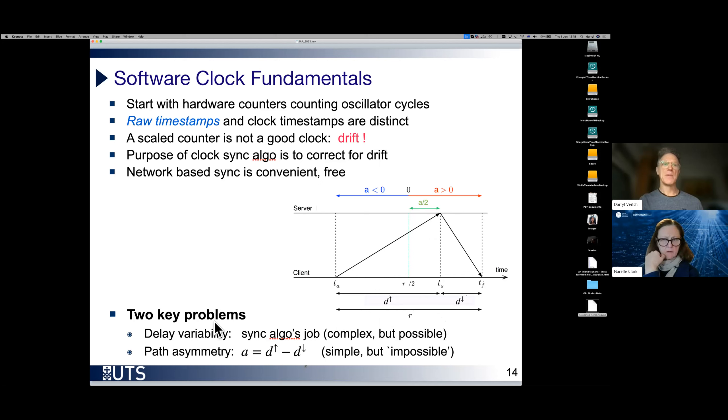So the raw data of these timestamps that we're collecting are both the client and the server. The key problem is, first of all, delay variability. Because of congestion in the network, delays are varying all over the place. So synchronization algorithm's job is to eliminate that delay, that variability. This can be complex, but it is possible within limits.